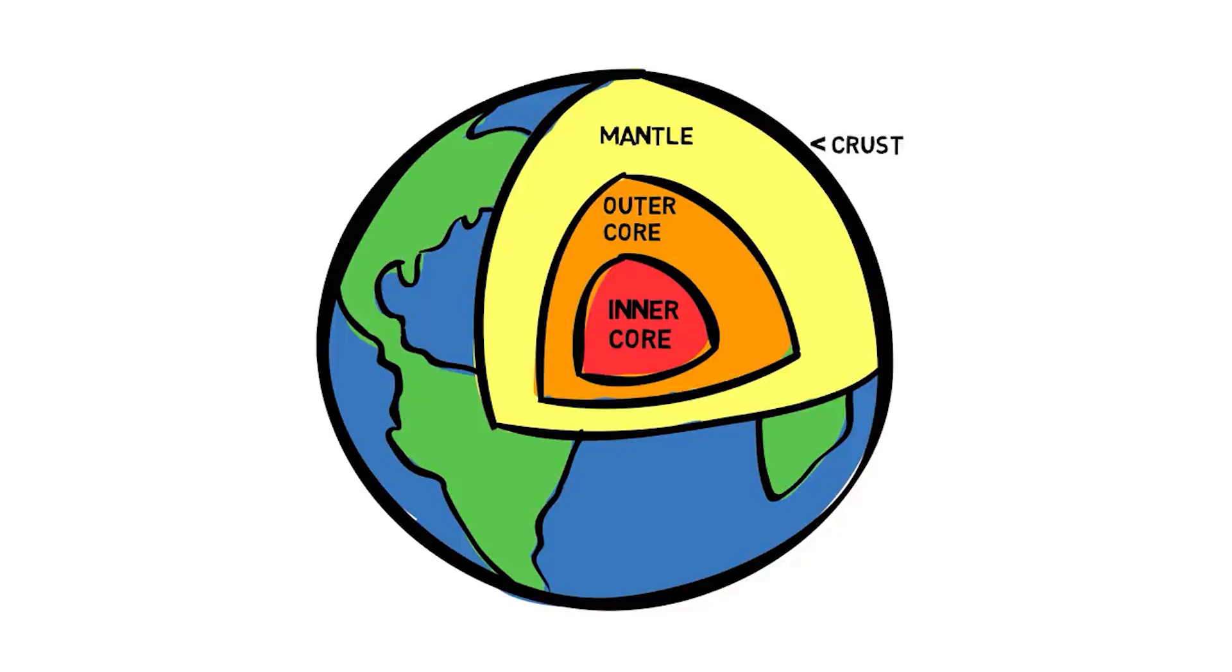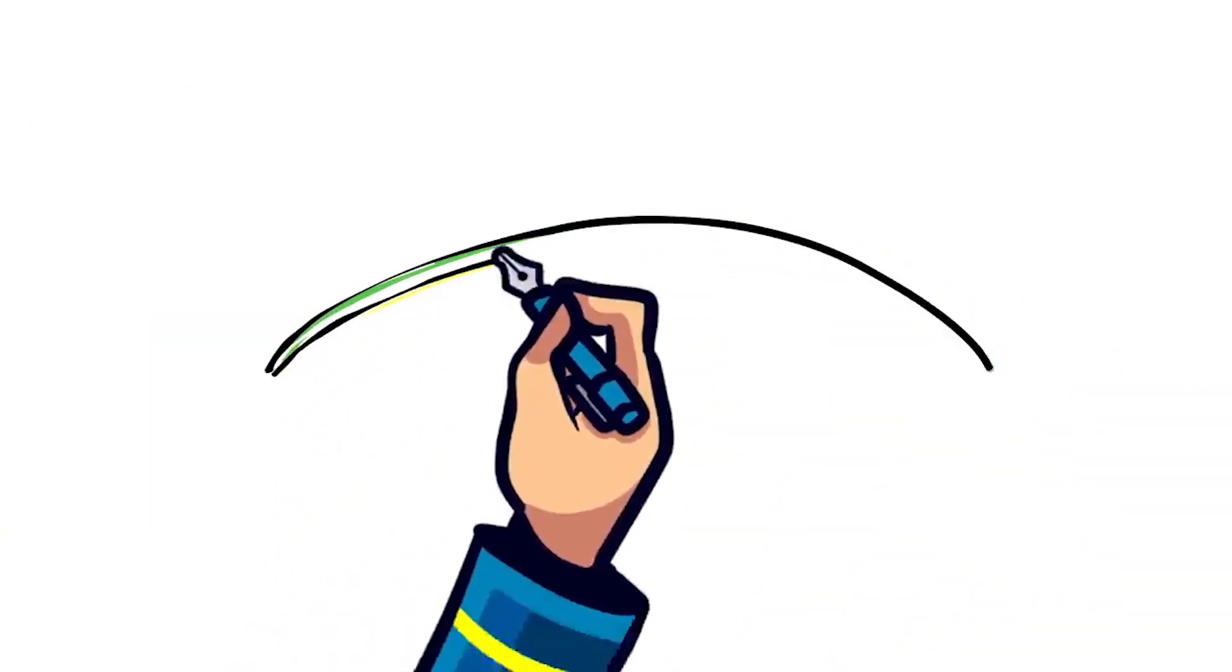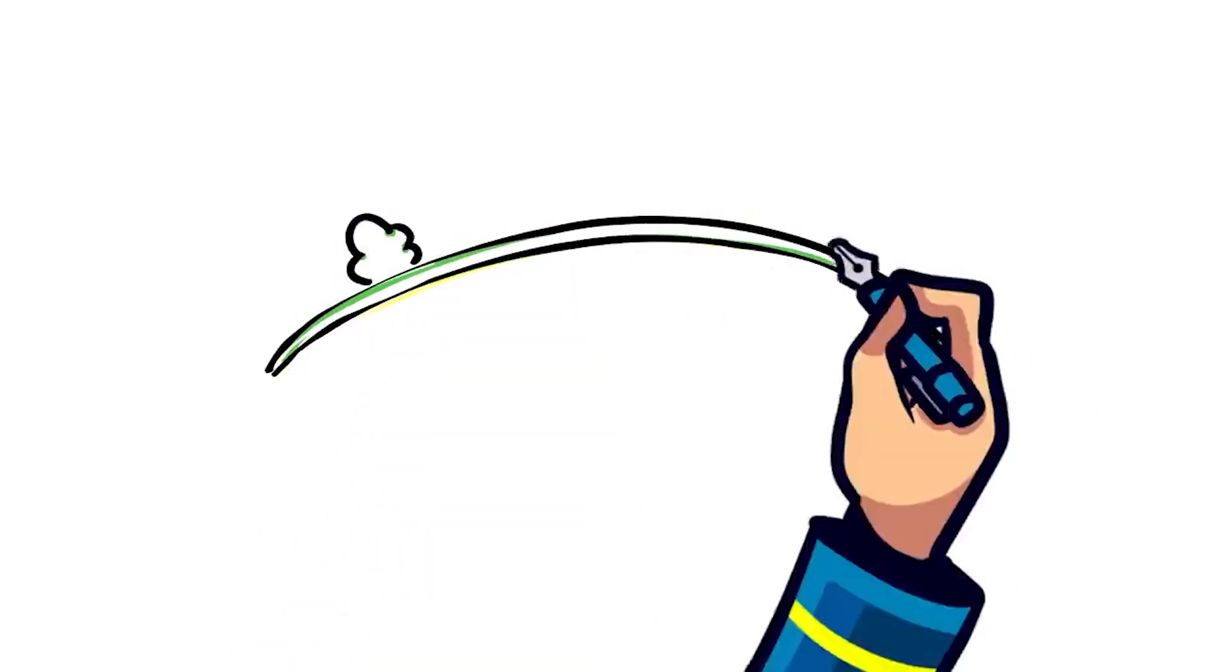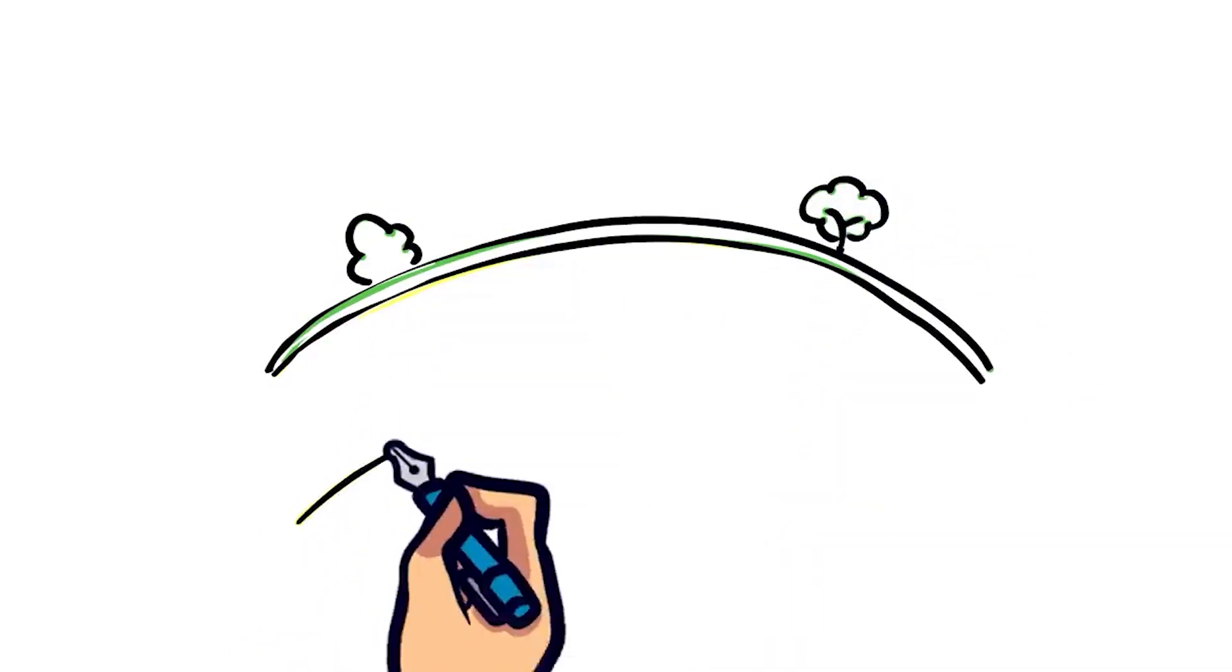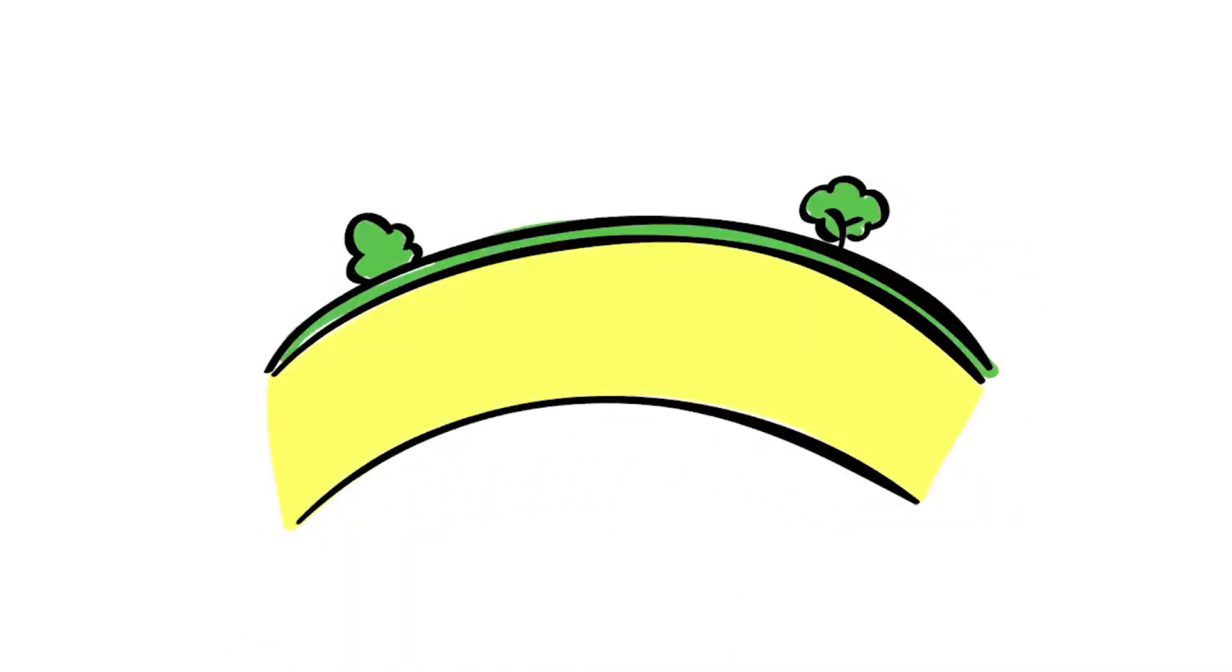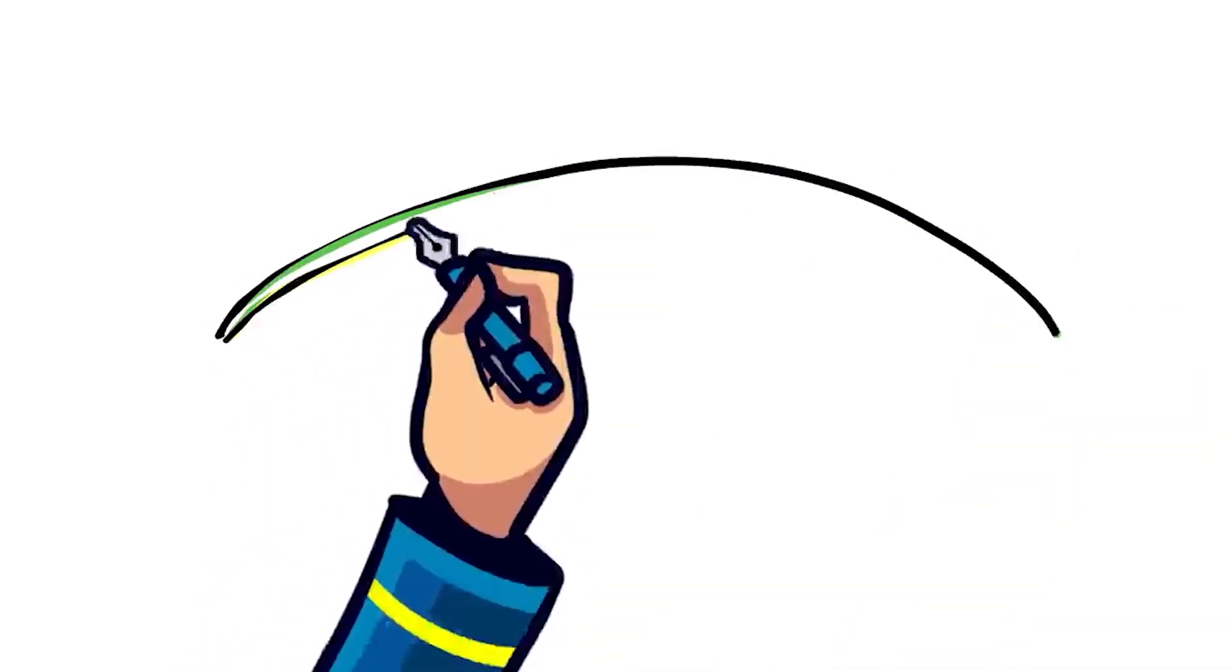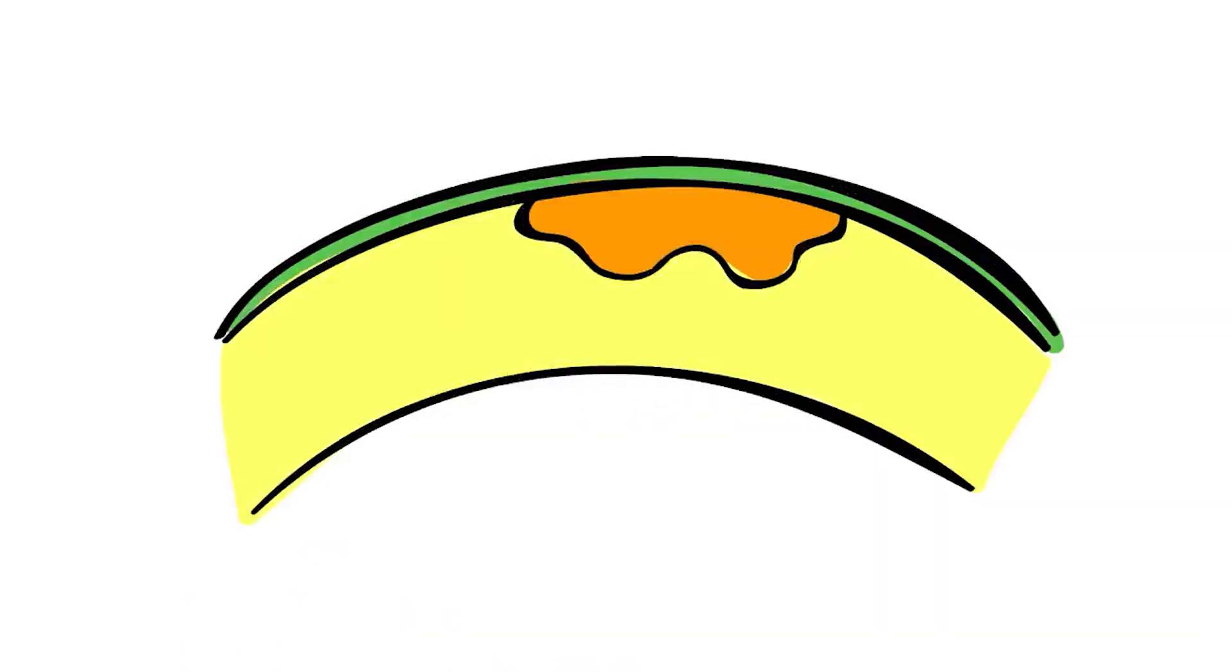We'll focus on the mantle and crust, as this is where all volcanic action takes place. The crust is the outermost layer, as well as the thinnest layer on Earth. Right below the crust is the mantle, where temperatures can reach up to 1000 degrees Celsius. Due to the high temperatures and increasing pressure in the mantle, rocks can melt to form molten rock or magma.